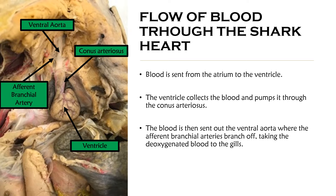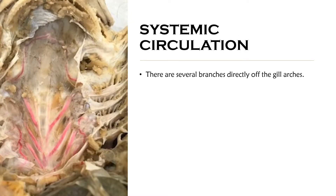Branching directly off the ventral aorta are what are known as afferent branchial arteries. Think of the word afferent as going towards the gills. So these afferent branchial arteries are taking the deoxygenated blood to the gills to become oxygenated. Now our blood is leaving the gills oxygenated, so we're moving into systemic circulation.